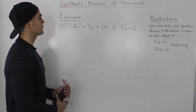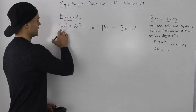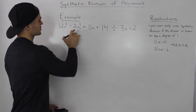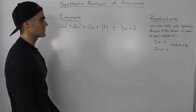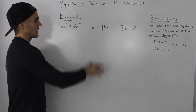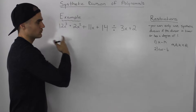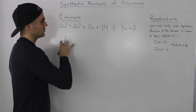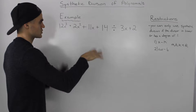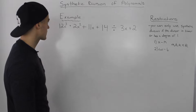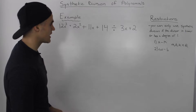Moving on to the next example for synthetic division of polynomials. We have 12x³ + 2x² + 11x + 14 divided by 3x + 2. We did this same example with long division, so I'll put a link in the description box to that example so you could compare both methods. But let's divide this synthetically.